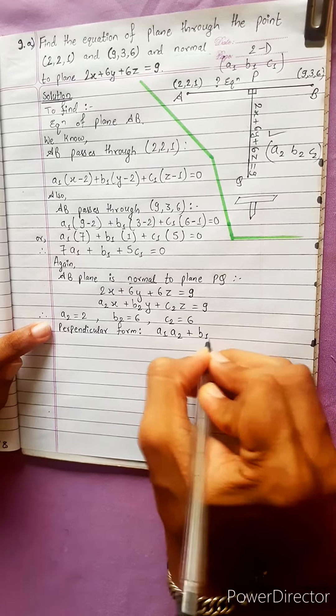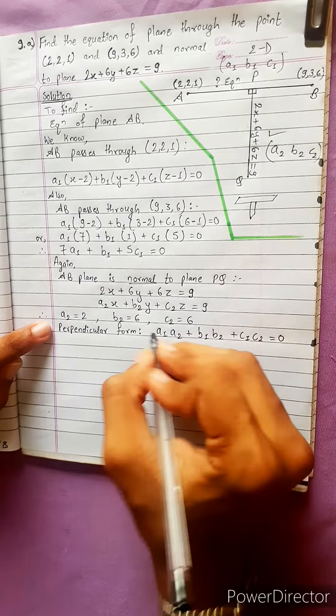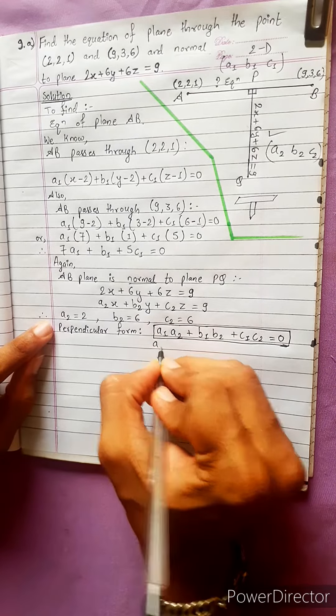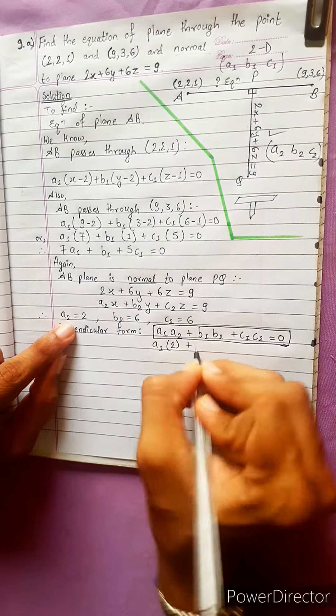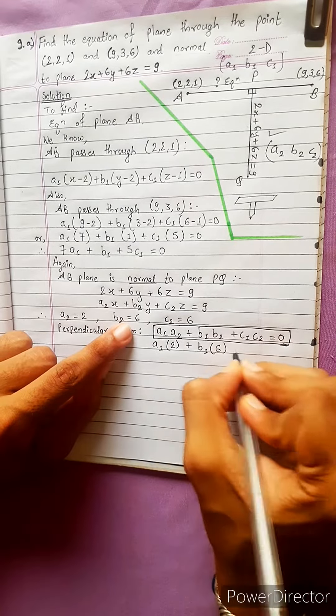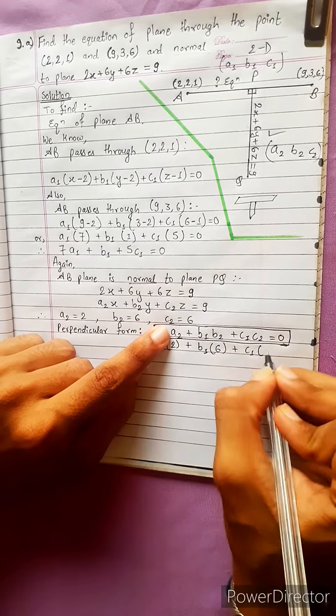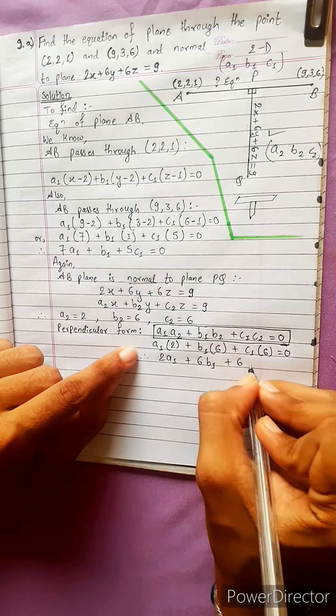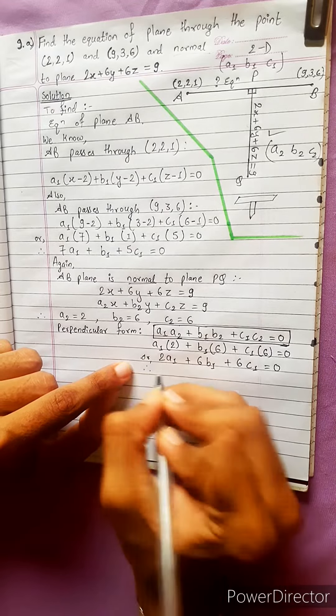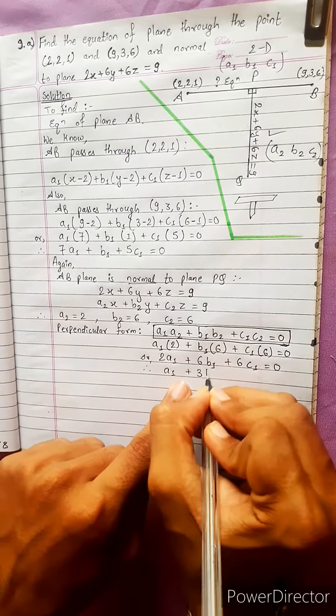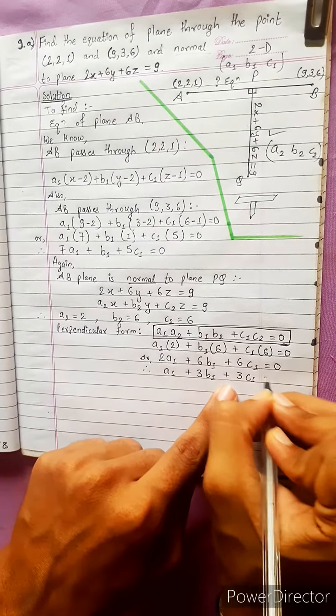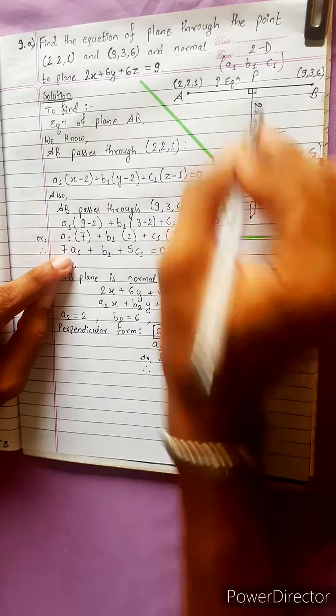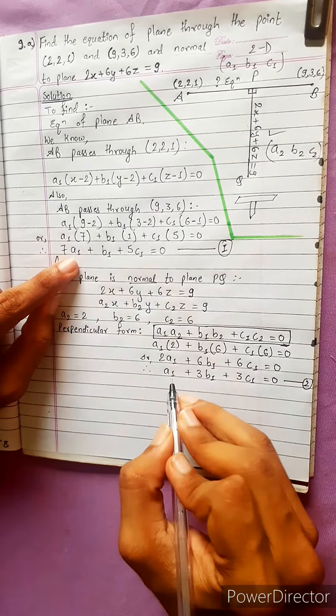Using perpendicular formula: A1A2 + B1B2 + C1C2 = 0. Now A1 times 2, plus B1 times 6, plus C1 times 6 equals 0. Therefore 2A1 + 6B1 + 6C1 = 0. Taking 2 common: A1 + 3B1 + 3C1 = 0. This is equation 2.